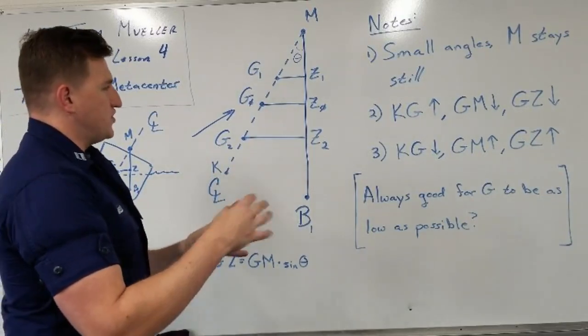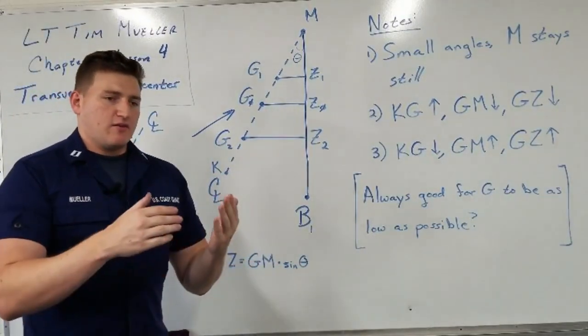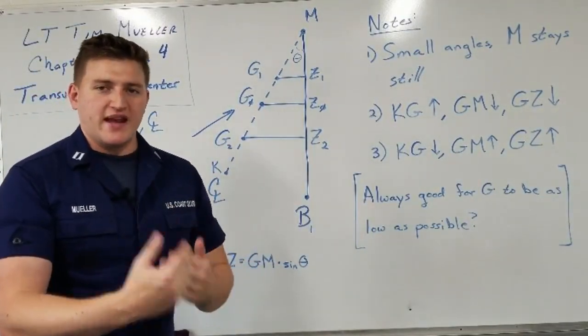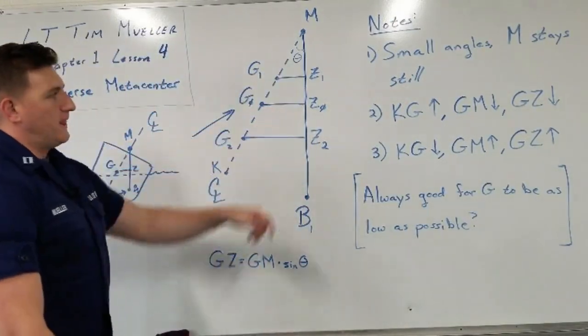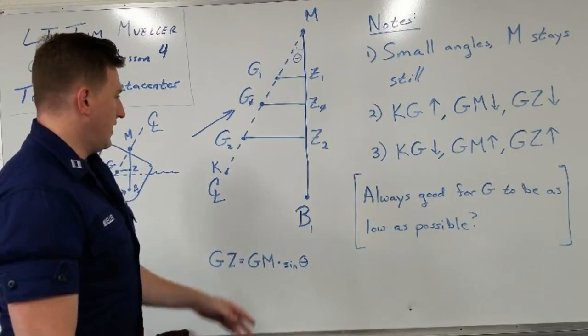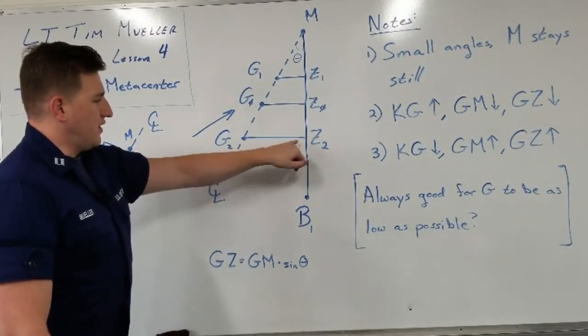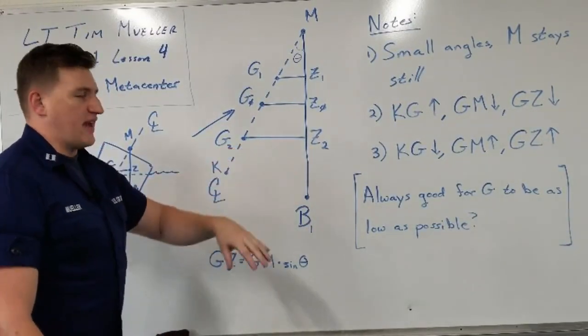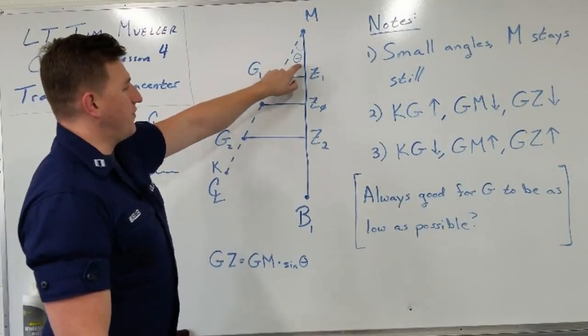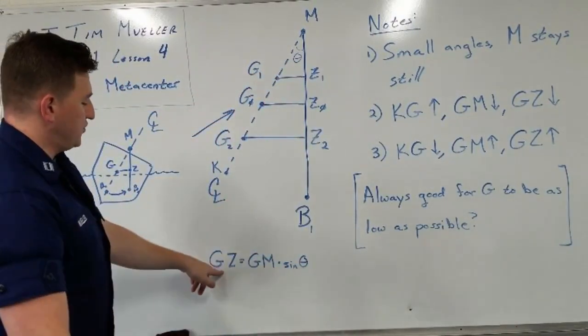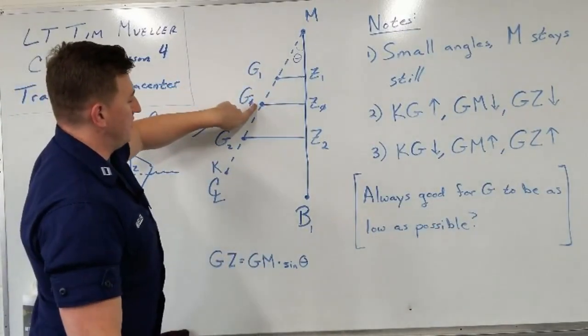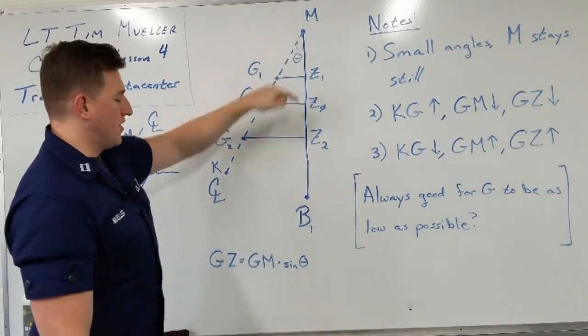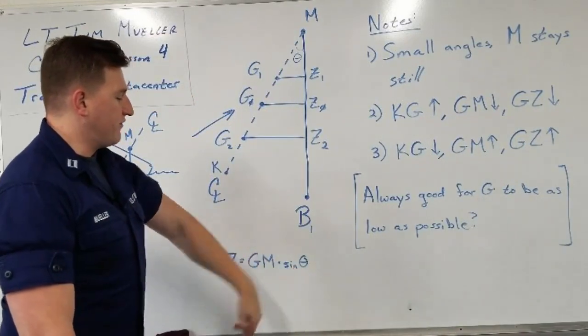So how do we find this GZ? There is a way that we do it. We find it on statical curves of stability, which we'll get to later. However, if you look at this triangle, and remember back to basic trigonometry, you can see that GZ, the opposite side to the angle theta, which is what we're inclined over to, GZ equals GM, which is the distance from the center of gravity that you have up to the metacenter, times the sine of theta.